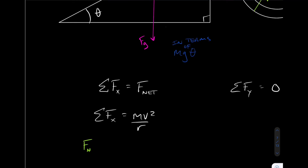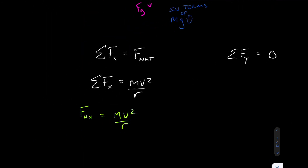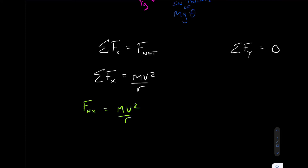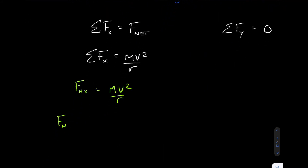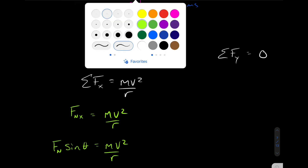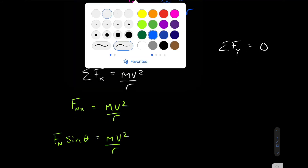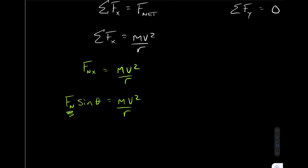In the x-direction, the only force is FN·x, which must equal mv²/r. Expanding FN·x as FN sinθ gives us FN sinθ = mv²/r. If we're trying to solve for v, we can't do it yet because we still have this unknown FN. We need to know what the normal force is equal to, so let's look at the y-direction.